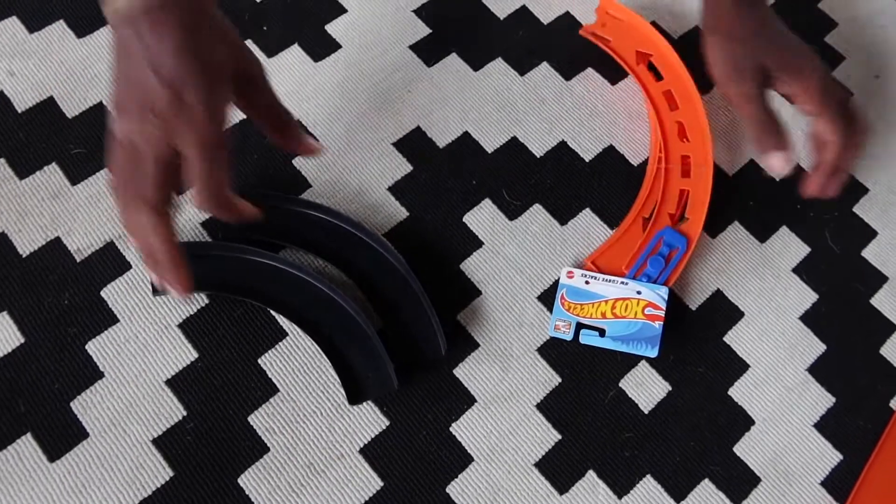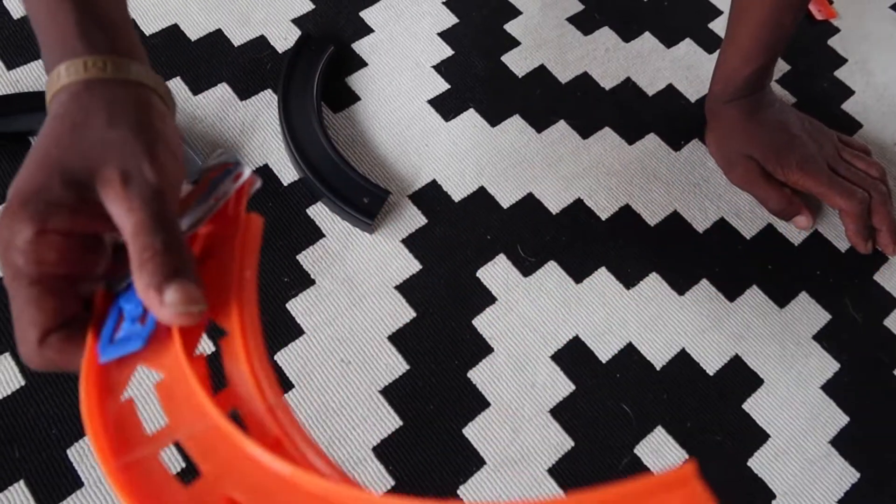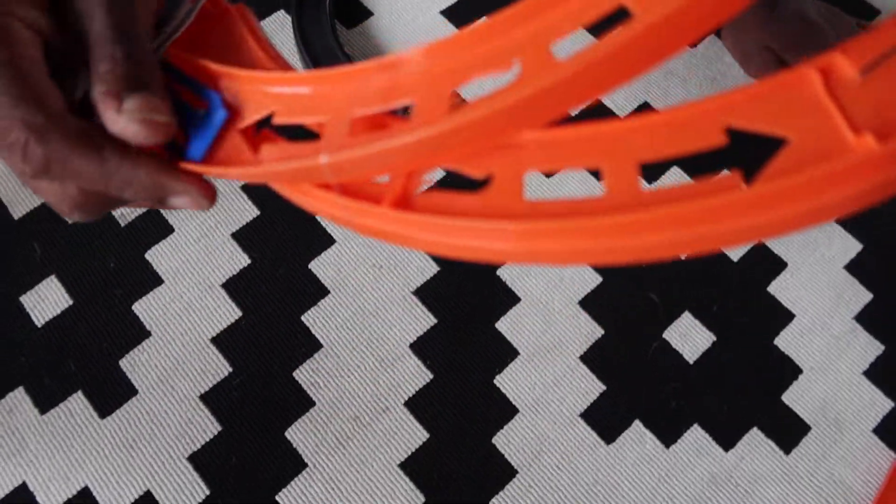So on my track, these are the turns, the curves. I went to the Dollar Tree and I ended up getting these curves. So let's see how these work out.